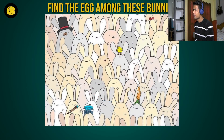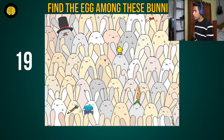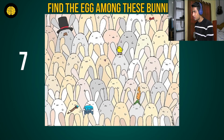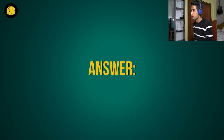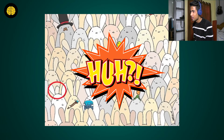Okay, let's go for number 12: find the egg among these bunnies. Maybe this will be easy — I think we need to look for the color. I don't think eggs have hands or legs or ears. Where's the egg? Guys, did you find it? Is that an egg? That looks like feet.